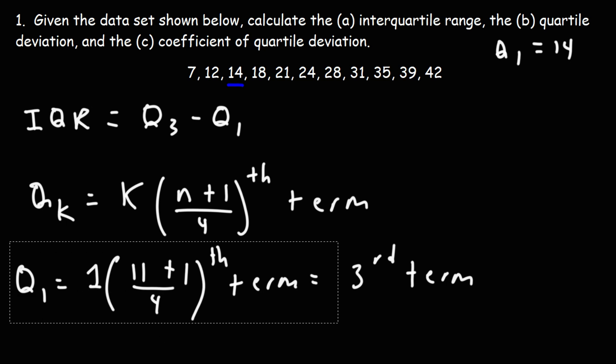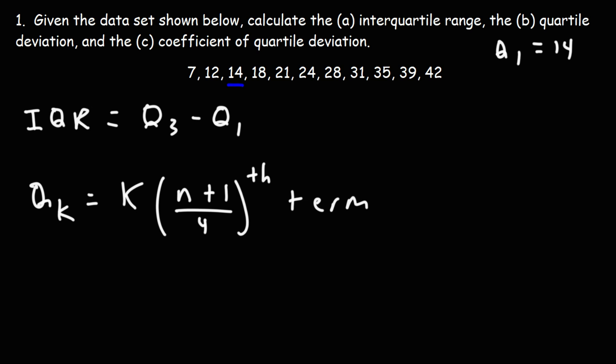Now we need to calculate the third quartile as well. So let's calculate Q3. This equation gives us the location of the quartile, but the data set gives us the value of that quartile. So for Q3, K is 3, and then N is still 11.